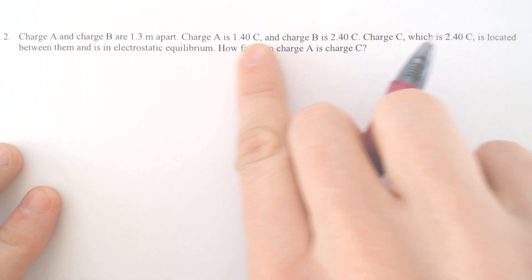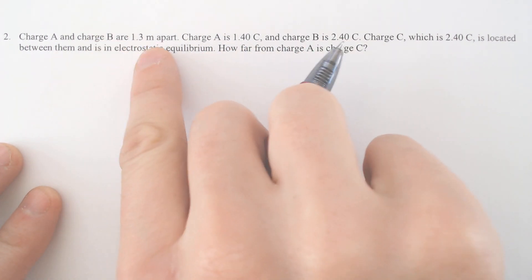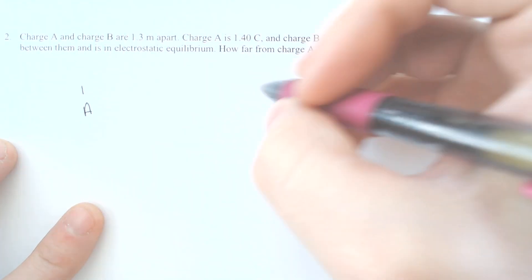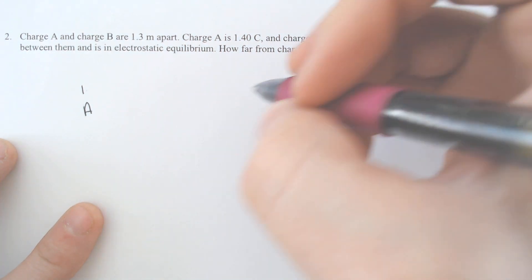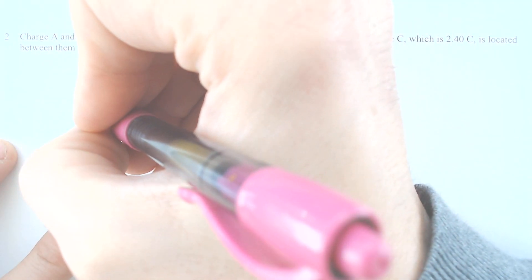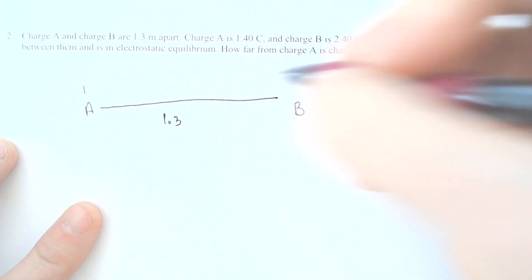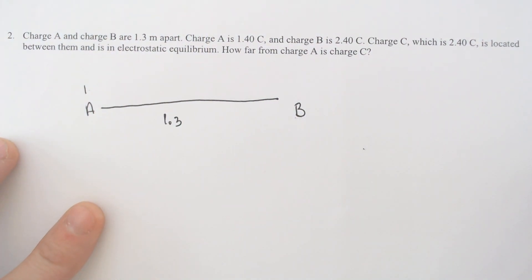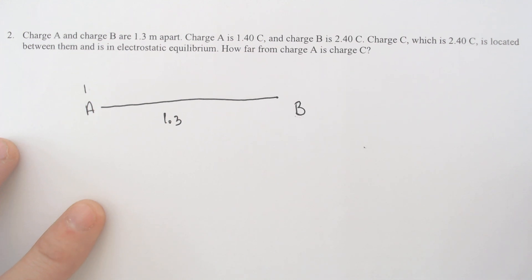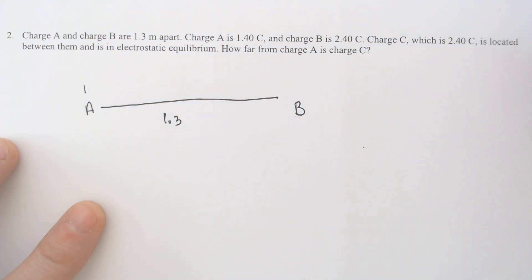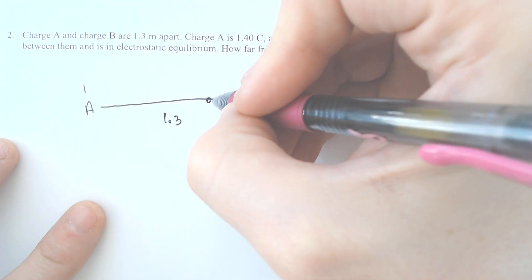So we have charge A and charge B and they are separated by a distance of 1.3 meters. So A is over here and B is going to be over here and the distance between these two is going to be 1.3 meters. And charge C is somewhere in between the two. So let's just say arbitrarily that C is around here.